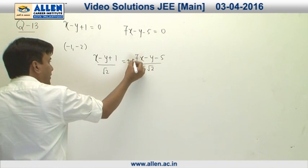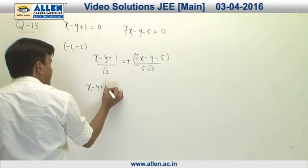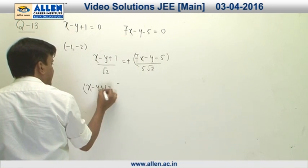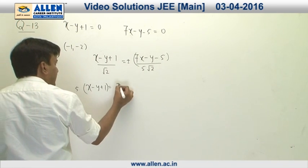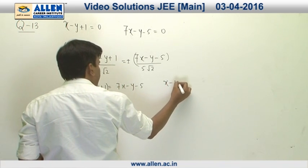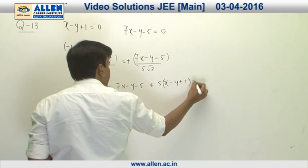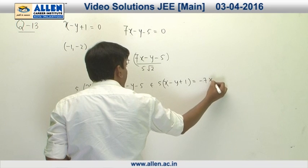If we cross multiply by 5, what we will get is x - y + 1 equals 7x - y - 5. Then it is going to be (x - y + 1) multiplied by 5 equals -7x + y + 5.